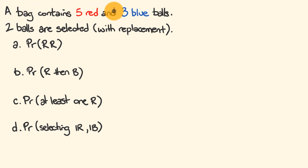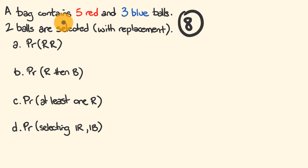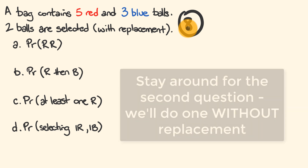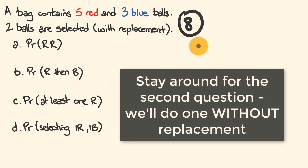A bag contains five red and three blue balls — altogether that's eight balls. Two balls are selected at random with replacement. This means that after each selection you put the ball back, so we choose the first selection out of eight balls, see what it is, put it back, then select from eight balls again.